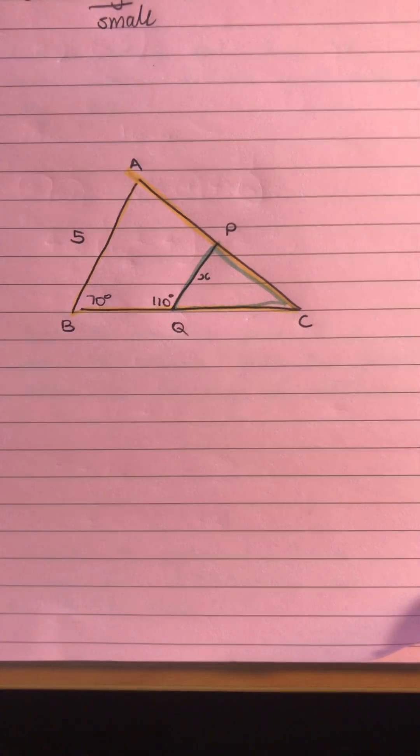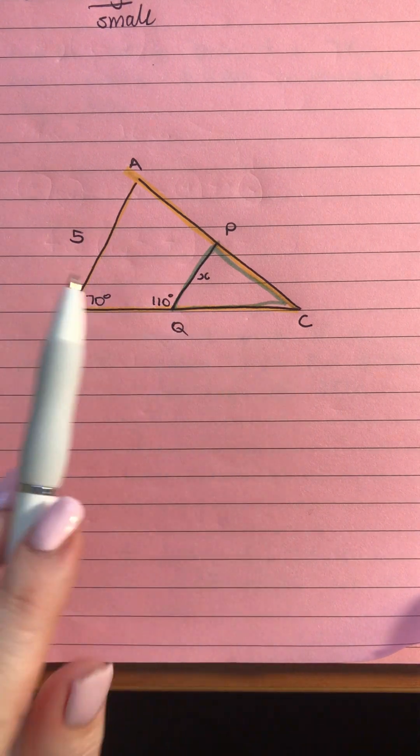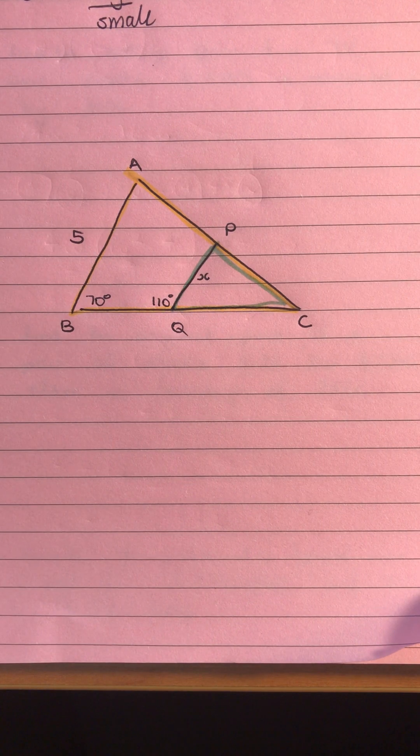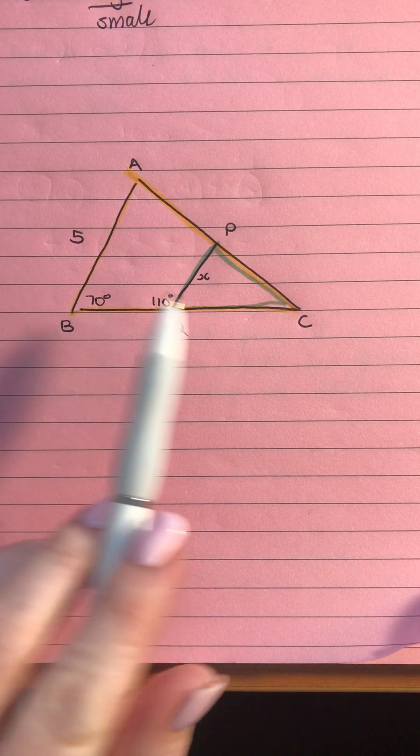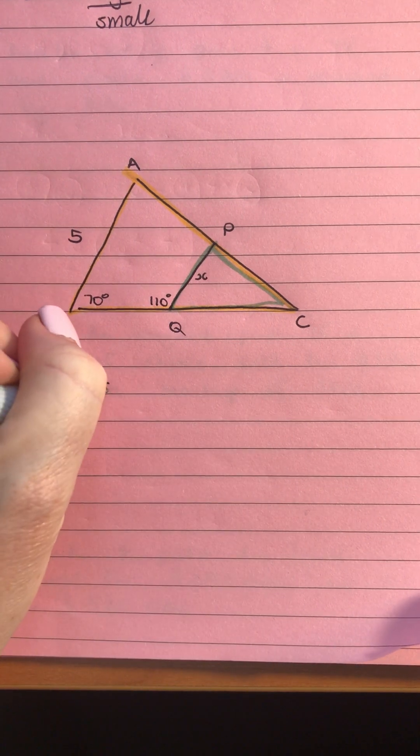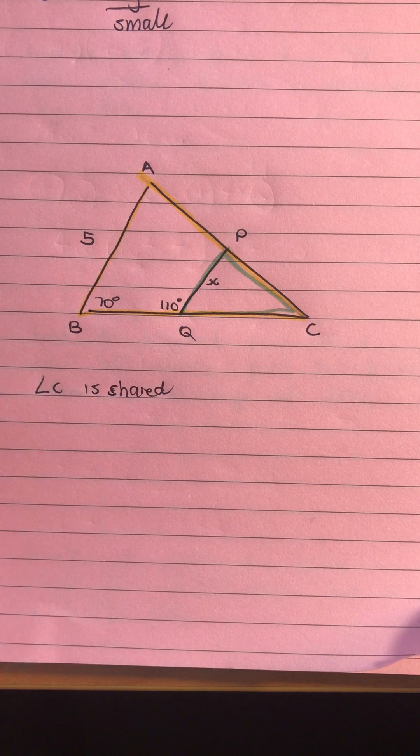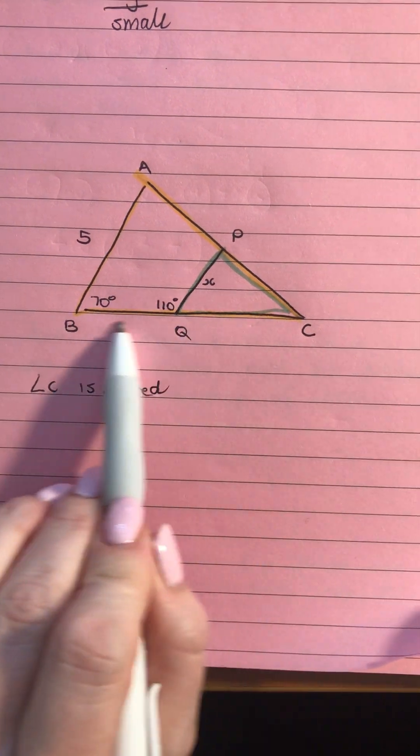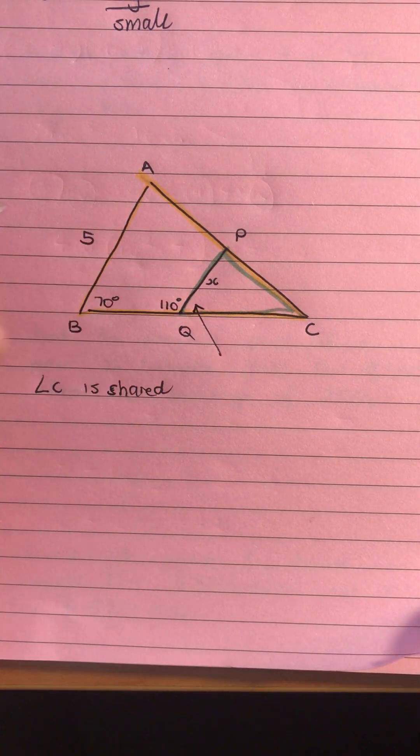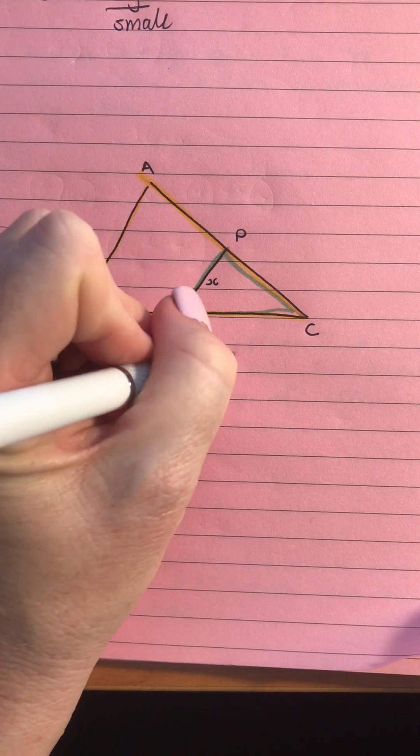So we want to write some statements to be able to prove this and looking at the fact that we only have a 5 and an x in terms of sides means we really have to do it all based on angles. So we can say that angle C is shared so we know that. We've got this number here 110, it's on a straight line so we can actually find this other angle here by doing 180 take 110 and that gives us 70 degrees.